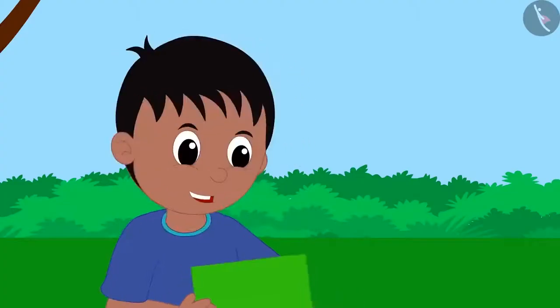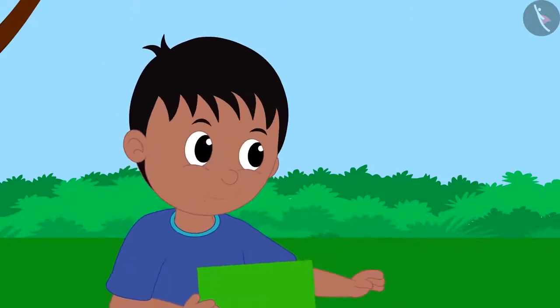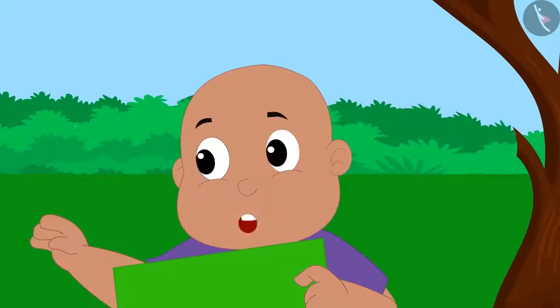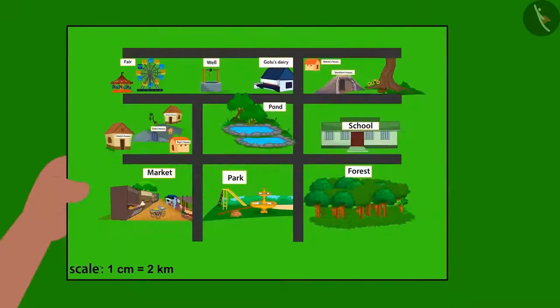Oho, Bablu, can't you spot the compass given on the map? No, where is that? Then Raju took a look at Bablu's map. Now I get it. There is no compass given on your map.